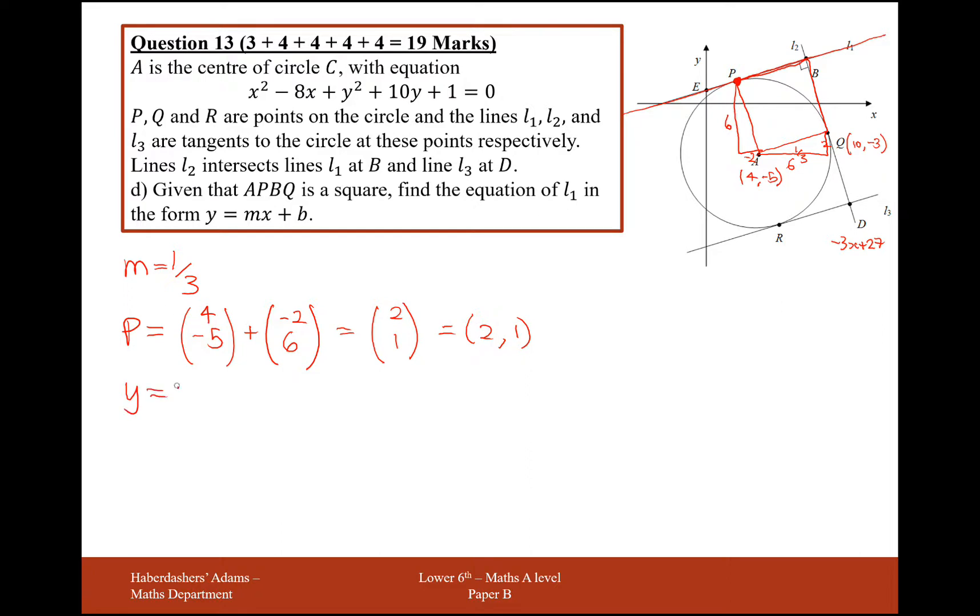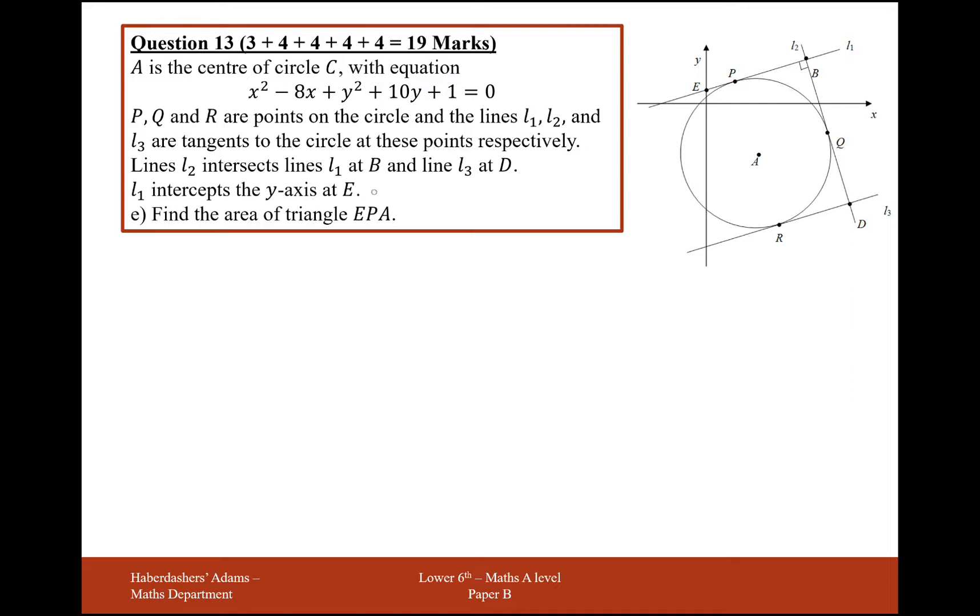So using y equals mx plus b, m I found earlier, which was a third, x plus b. And I'm now going to plug in the coordinate 2, 1. So it's 1 equals 1 third of 2, so 2 thirds, plus b. 1 take away 2 thirds is 1 third. So the equation of this line here is y equals 1 third x plus 1 third.